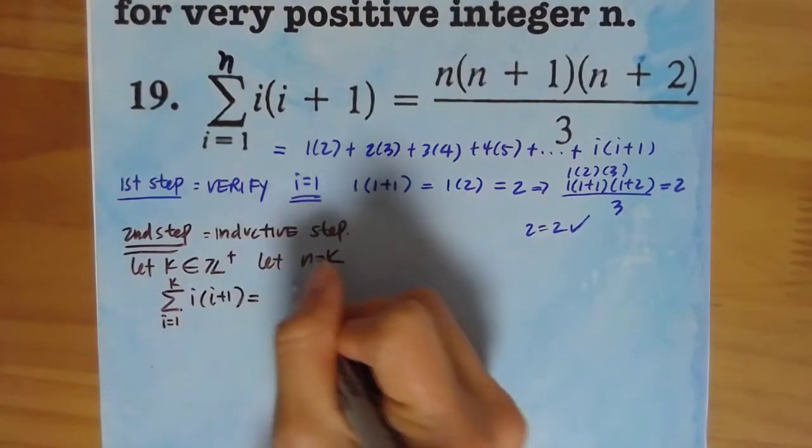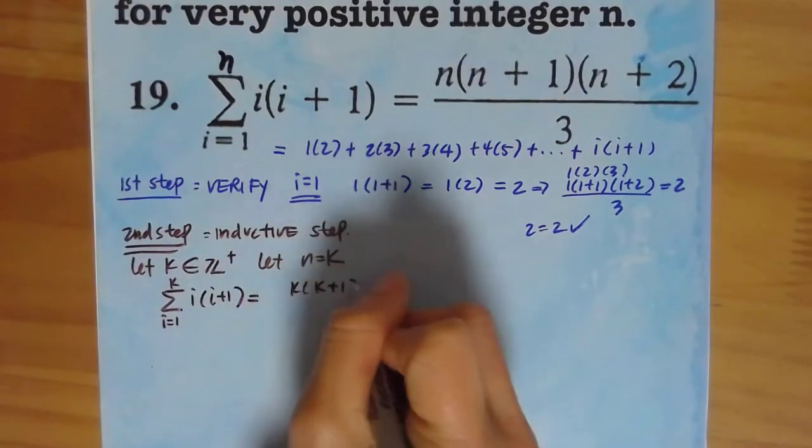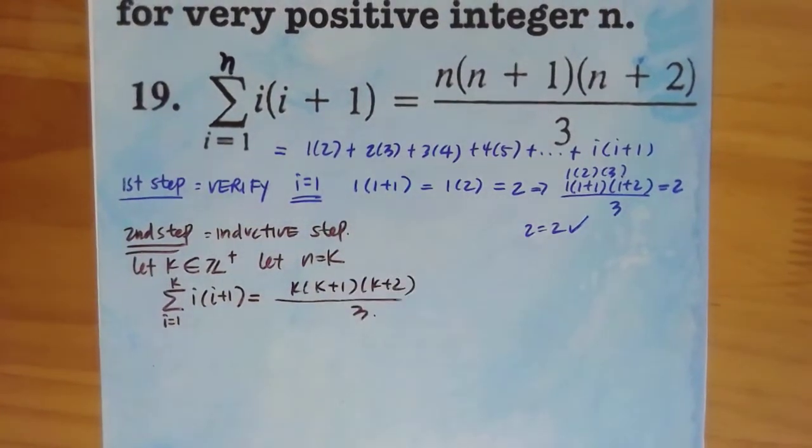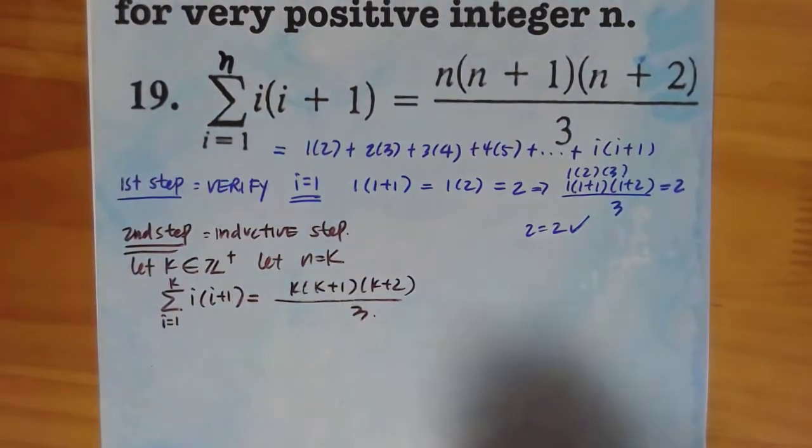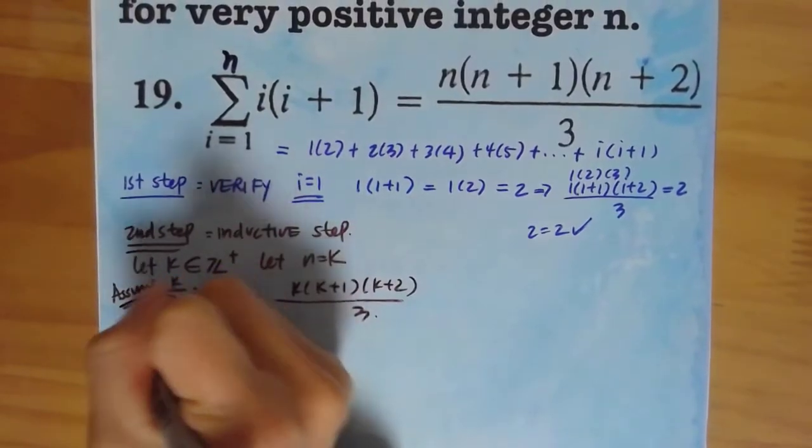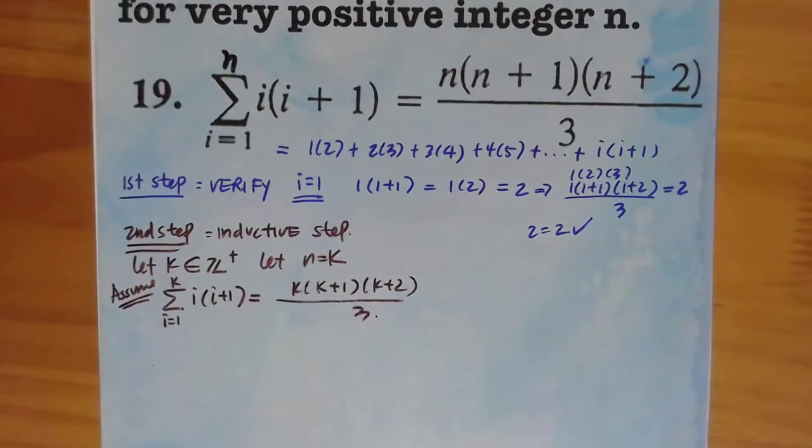And that's going to equal i times i plus 1, which means it's going to equal k, k plus 1, k plus 2 all over 3. That's the first thing that we have to claim. Assume this is true. We're going to assume that this is true.